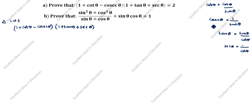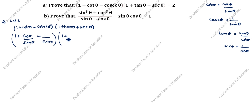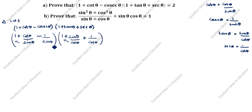Now we will split this one as per these formulas. cot θ is cos θ by sin θ. So we get: (1 + cos θ/sin θ − 1/sin θ). The denominator sin θ is common, so we take sin θ as common, giving: sin θ + cos θ − 1.